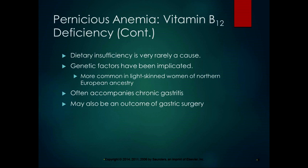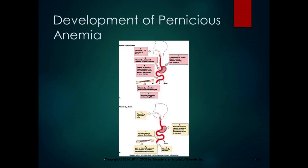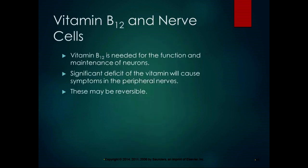Lack of B12 interferes with DNA synthesis and affects the formation of red blood cells. B12 is needed for the function and maintenance of neurons, and a significant deficit can cause symptoms in the peripheral nerves that may be reversible. A clinical example: a patient with pernicious anemia showed no manifestations until he lost the ability to walk. After ruling out Guillain-Barré and other conditions, it was confirmed as pernicious anemia. With B12 injections, he has been regaining his function.